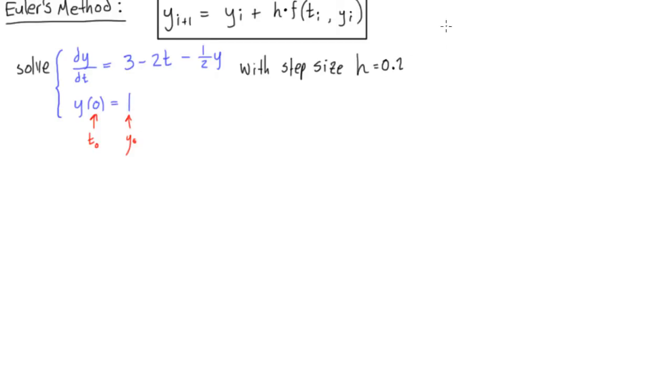Secondly, we also want to identify the t value is going to be changing throughout the problem. So we said in the last video that t of i is equal to i times the step size, or in this case we will have i times 0.2.